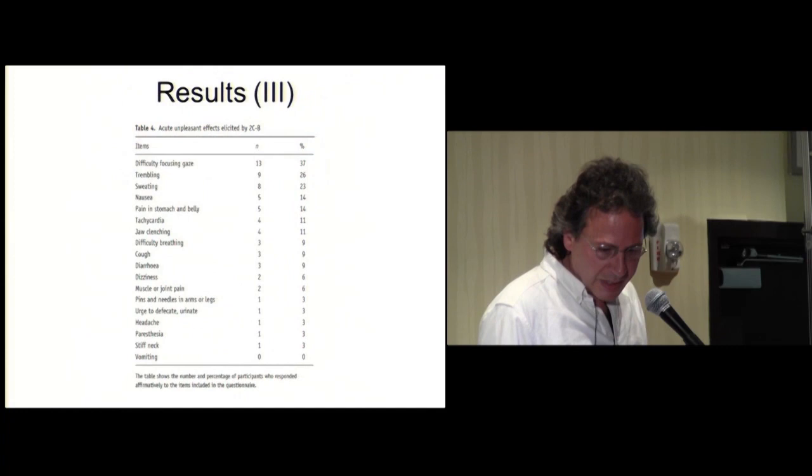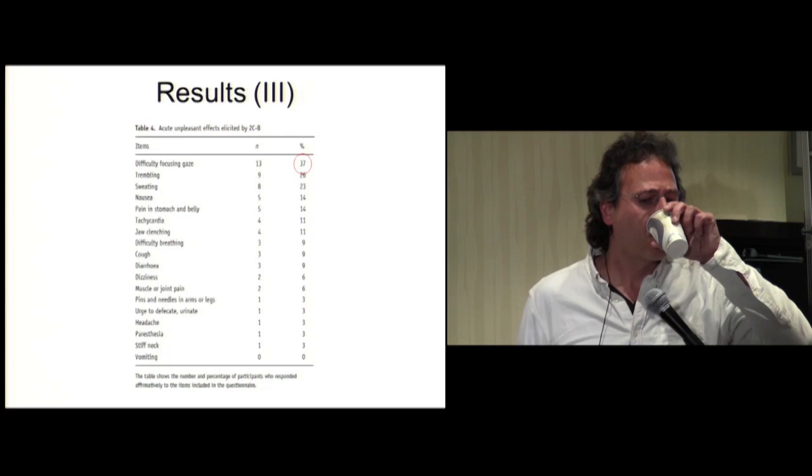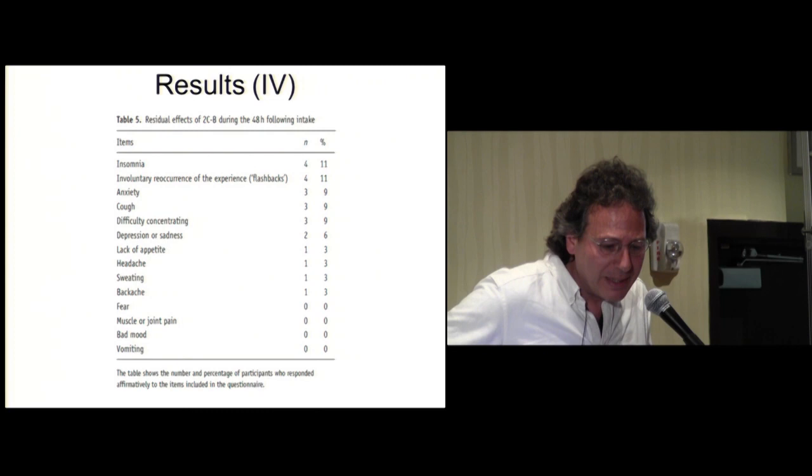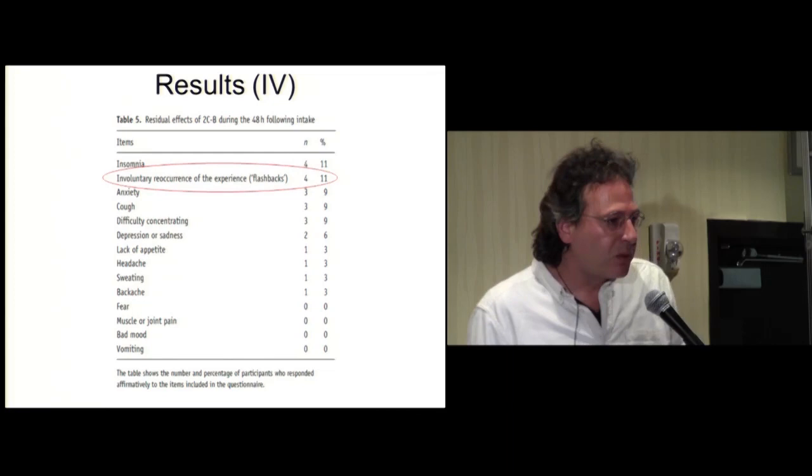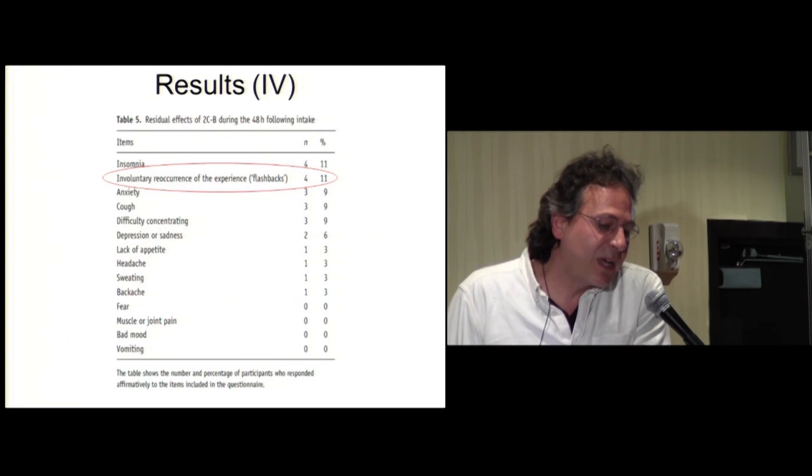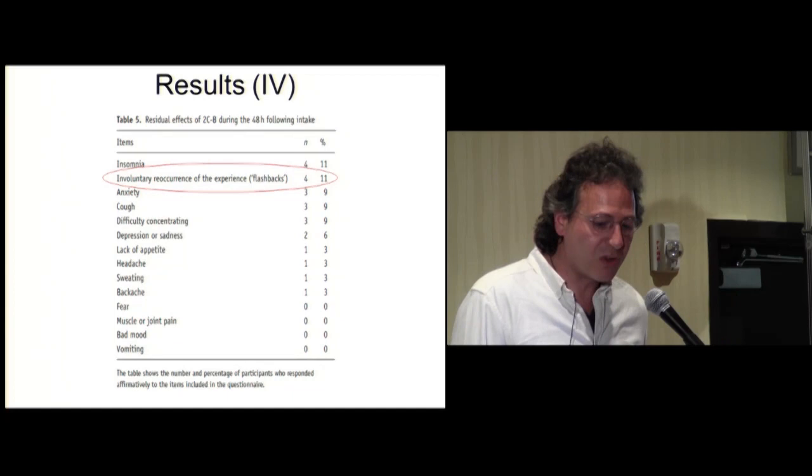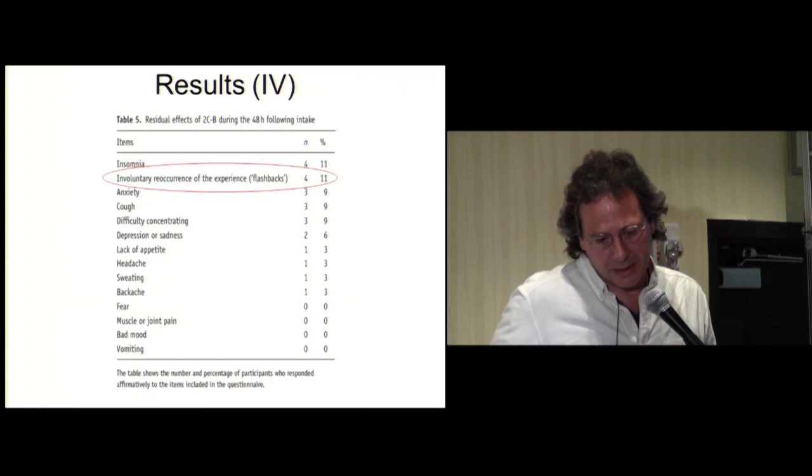Regarding acute unpleasant effects elicited by 2CB, the main one was difficulty focusing gaze. Trembling was another one. Regarding the residual effects of 2CB during the 48 hours following intake, the main one was involuntary recurrence of the experience. This was a very surprising result. We can speculate that maybe it's because the experience with 2CB was intensive enough to keep remembered along the following days. Or maybe the flashbacks have some relationship with the perceptual symptoms, and as 2CB is a very perceptive drug, maybe there is some kind of relationship. I think it will be very interesting to study in the future this specific residual effect.